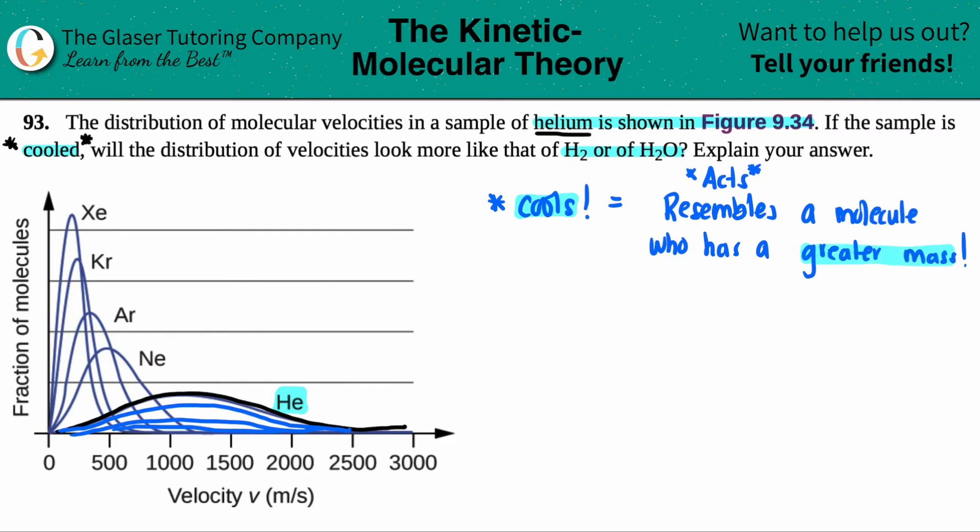So the idea here is that when you're cooling, you're always going to resemble or act like a molecule that has a greater mass than you. Because when molecules have a greater mass, their velocities decrease. And that's the idea of being under the general curve of whatever molecule you're talking about. So your velocity is going to start dropping, and that's what happens when your mass increases. The bigger you are, the slower you're going to move around your container.